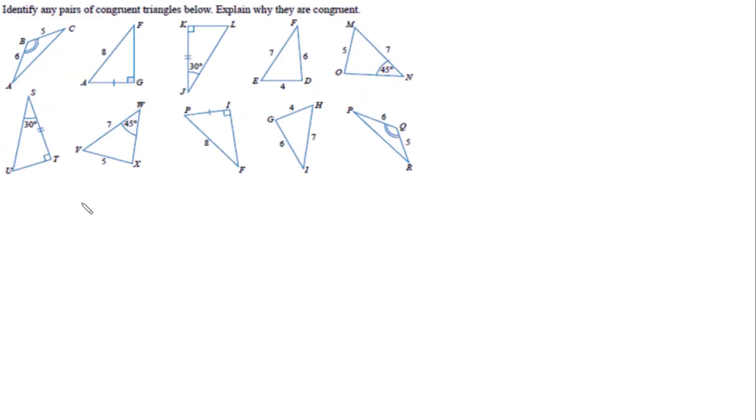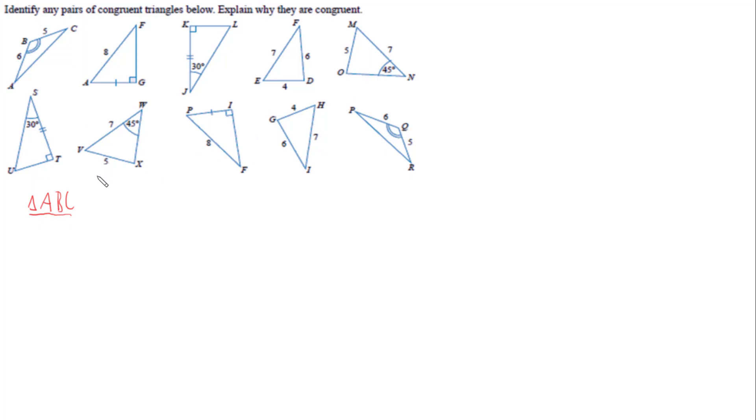Let's start off with our first triangle, triangle ABC, and see if it's congruent to any of the others. For it to be congruent, it must have one of four possible properties: all three sides the same — but we only know two out of three sides. It could be a right-angled triangle with one side and the hypotenuse the same — but it's not right-angled. Two angles and the side between them — but we've only got one angle marked. Or two sides and the angle between those two sides.